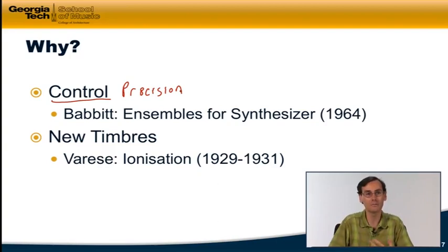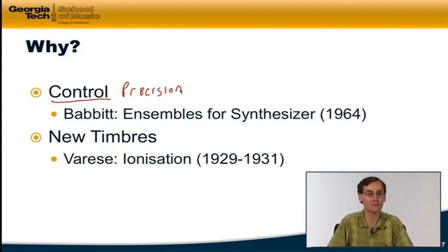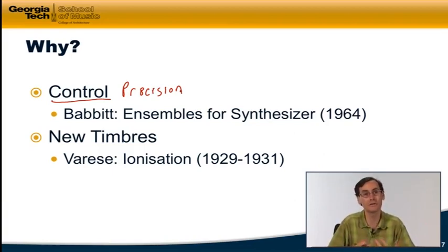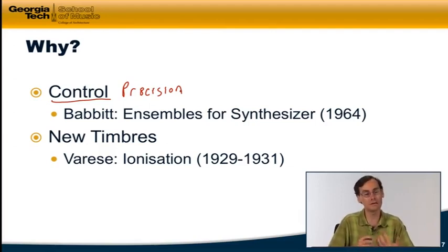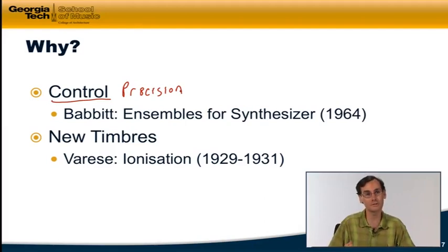Or a composer might want to create incredibly complex rhythms — like the tempo relationships that Conlon Nancarrow did with his player piano rolls and his player piano studies. These are things that are incredibly difficult or perhaps impossible for human musicians to actually realize with complete precision. Computers, on the other hand, are very good at doing exactly what they're told and realizing things very precisely.